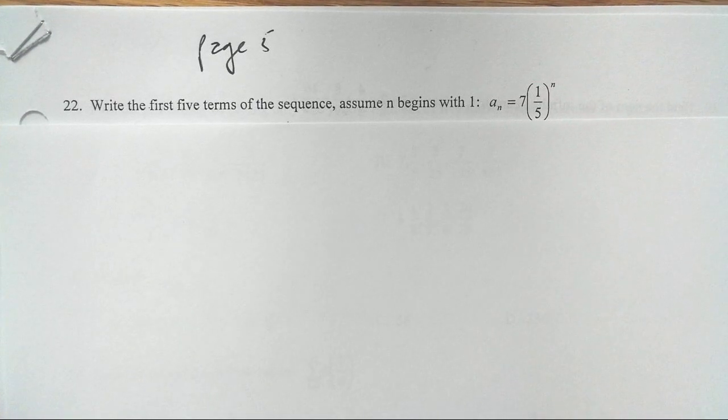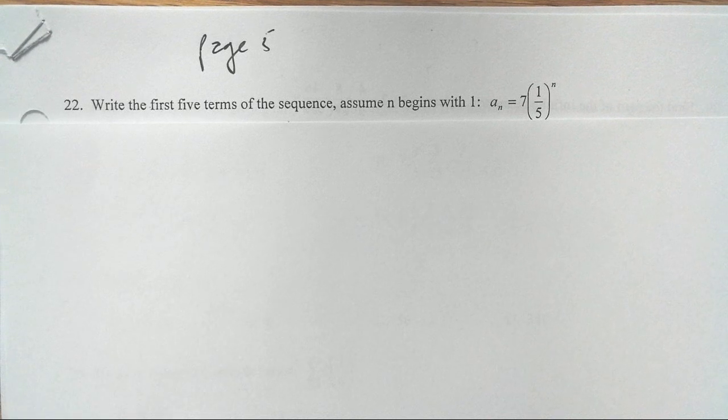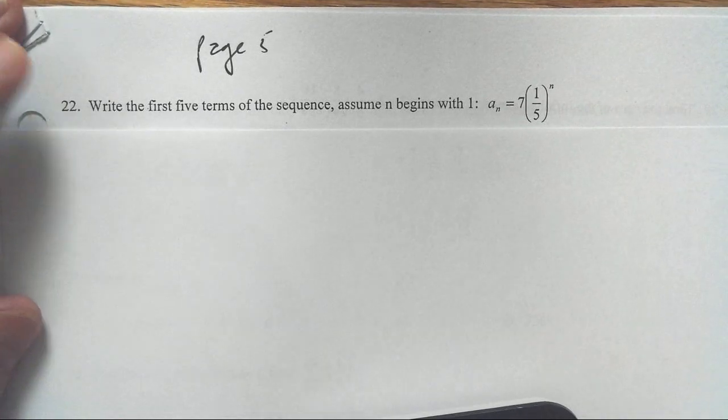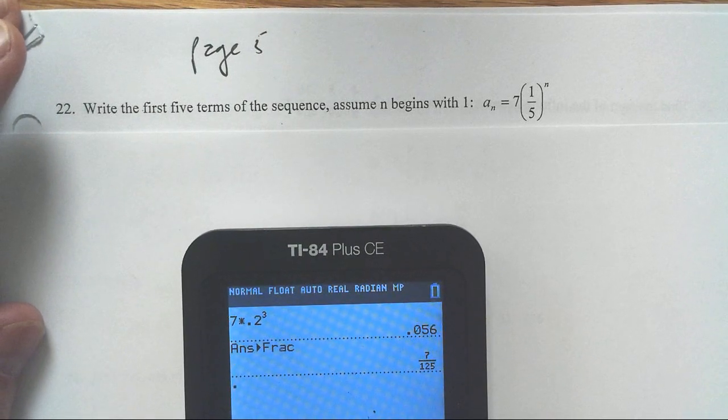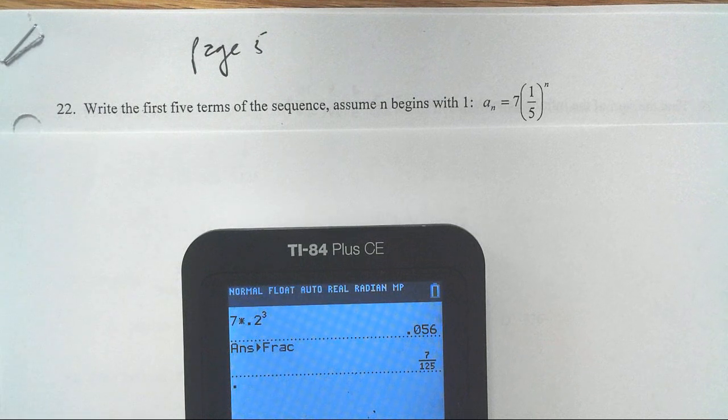Welcome. We'll take a look at page 5 from our semester 2 exam. All of these are done in separate pages as a reminder. Number 22, the beginning of page 5, asks us to write the first five terms of the sequence. Assume n begins with 1.